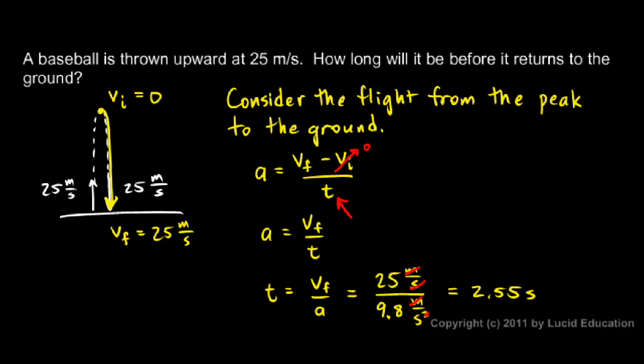So for the entire flight, if we want to know the time for the entire flight from start to finish, it will be twice that. So our answer is going to be the 2.55 seconds times 2, which is 5.1 seconds for our final answer. That's the time that the baseball is in the air.